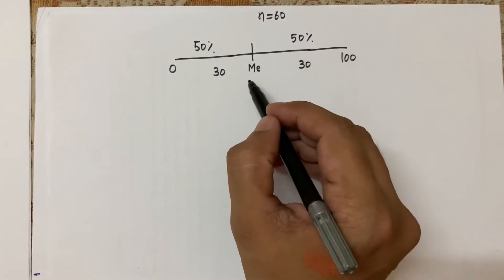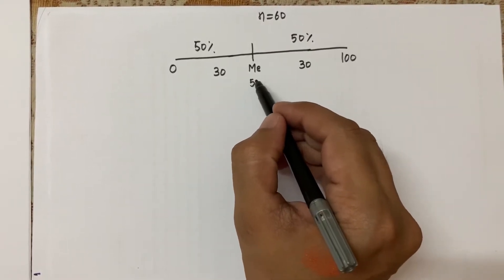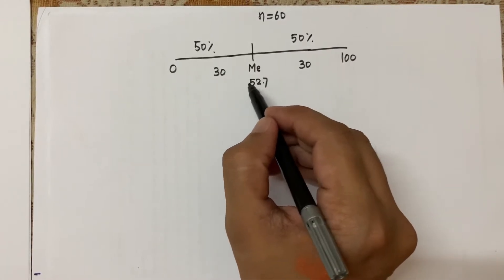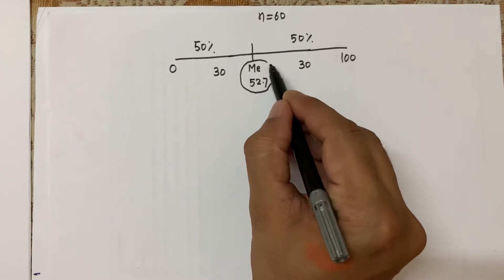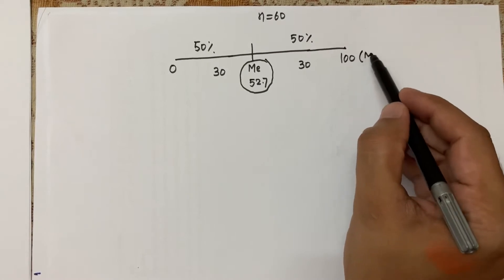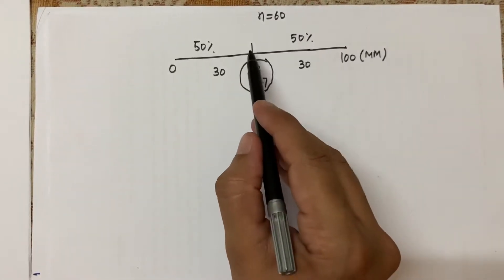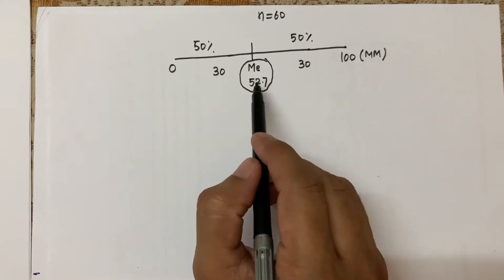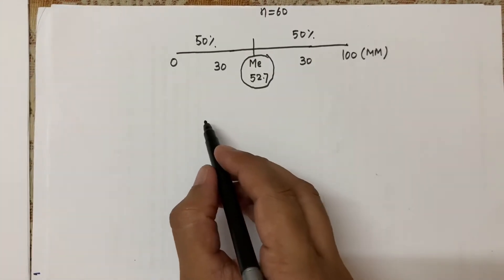For example, if the median marks of 60 students who took a test out of 100 is 52.7, then exactly 50% of the students will be scoring below 52.7 and 50% will be scoring above 52.7.